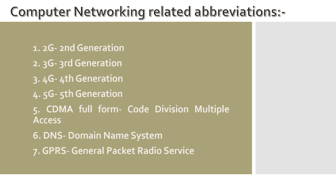Now we have Computer Networking related abbreviations. As we talked about the generations, here come their short forms: 2G is Second Generation, 3G is Third Generation, 4G is Fourth Generation, and 5G is Fifth Generation. Many people use 5G today but do not know that the G stands for Generation. CDMA: Code Division Multiple Access. DNS: Domain Name System. GPRS: General Packet Radio Service.